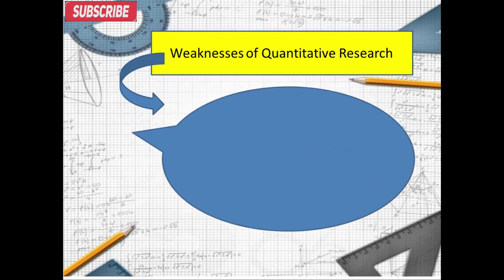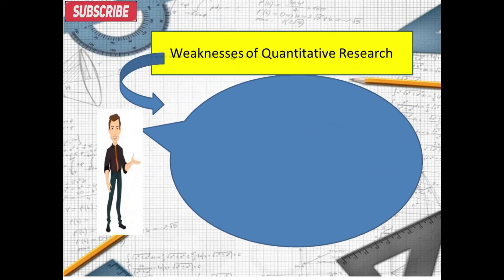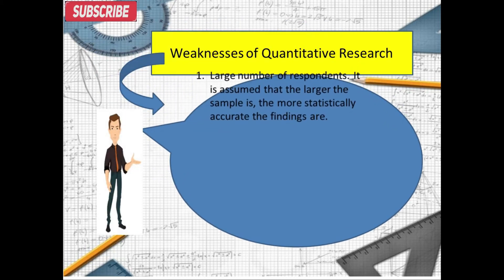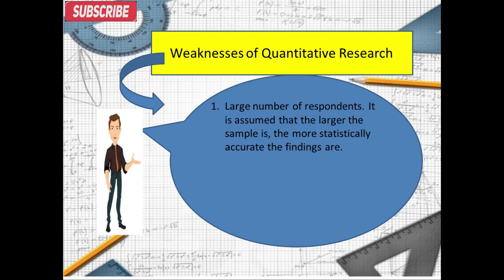Weaknesses of Quantitative Research. 1. Large number of respondents. It is assumed that the larger the sample is, the more statistically accurate the findings are.